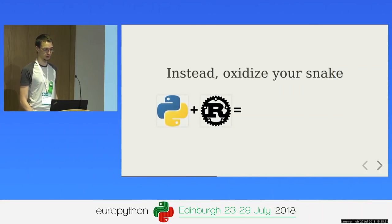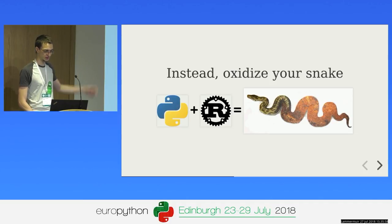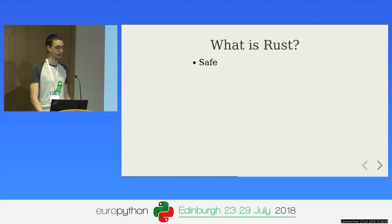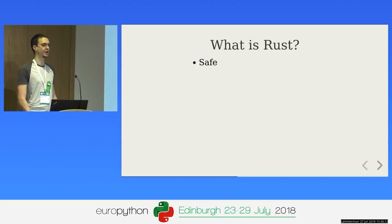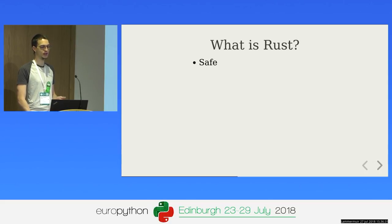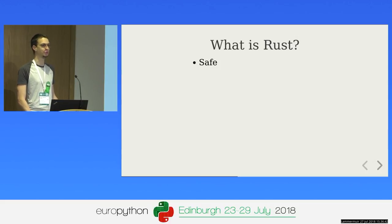Instead, we're going to oxidize our snake — use Python and Rust together to make an oxidized snake. What is Rust? Rust is safe: you're not going to get data races or uninitialized memory. It's very hard to crash your Rust program. You can make things unsafe, but you have to be very explicit about it. The compiler is a bit demanding — you'll spend time fighting it, but if it compiles you can be reasonably sure it won't crash.